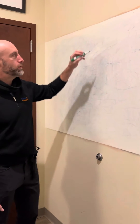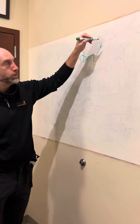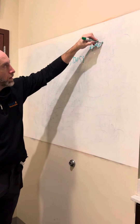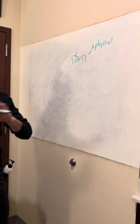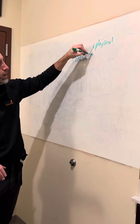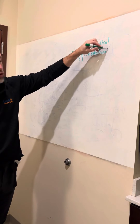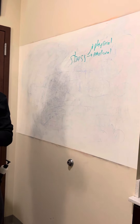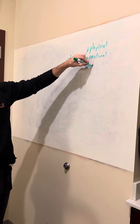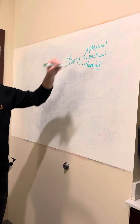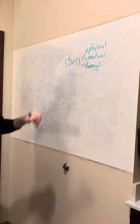Anytime we have a stressor, there are three types of stressors. We have physical stressors — how we move, prolonged sitting, golf, whatever it is, any kind of physical stressor or traumatic event. We have emotional stressors, which nobody has. Any kind of emotional trauma, daily stressors. And then we have chemical stressors — how we eat, how we breathe, environmental pollution, toxins, etc.